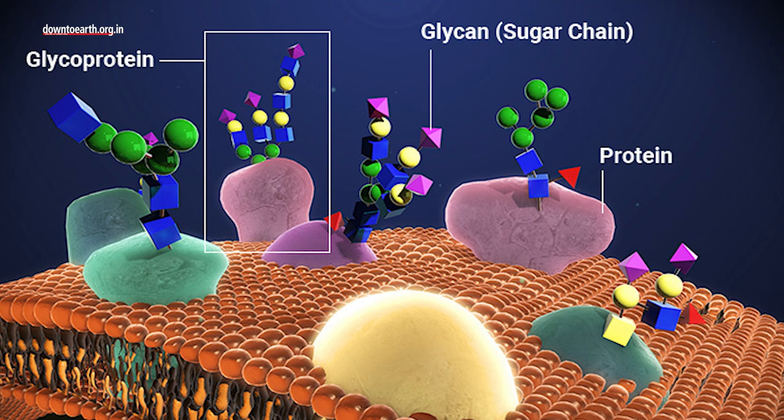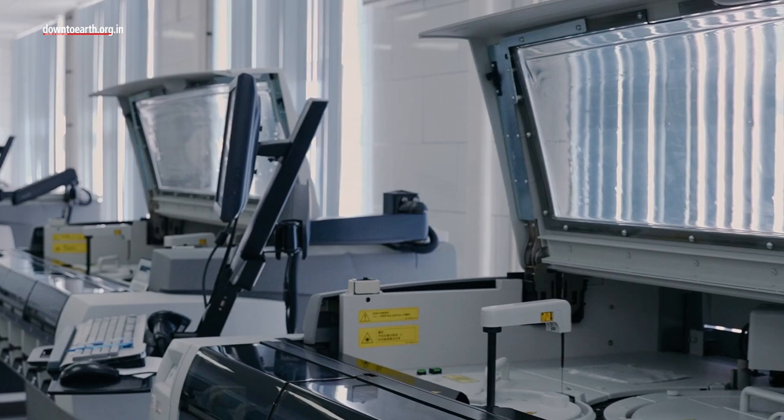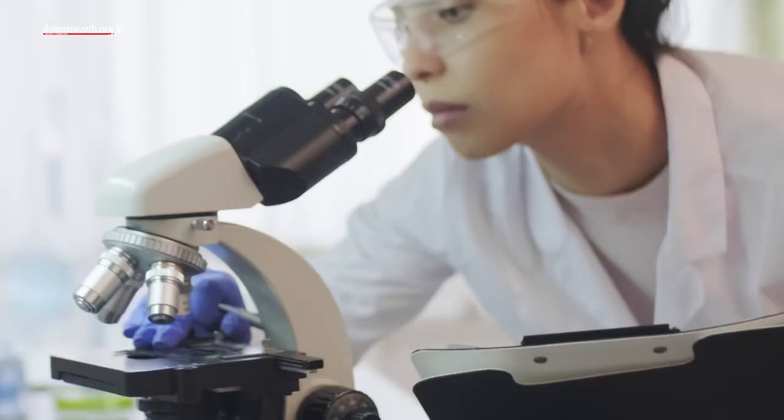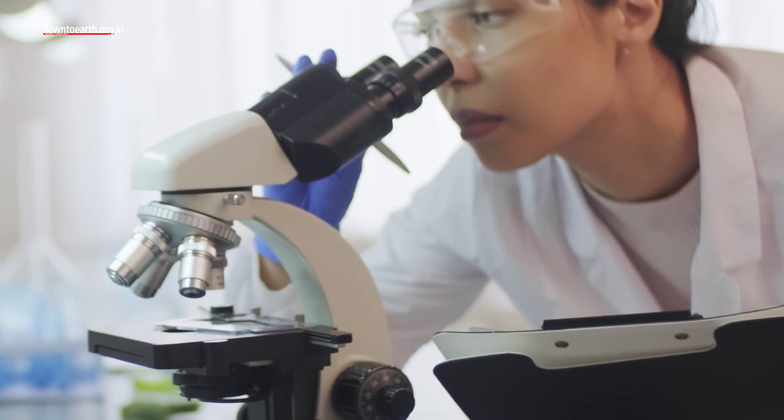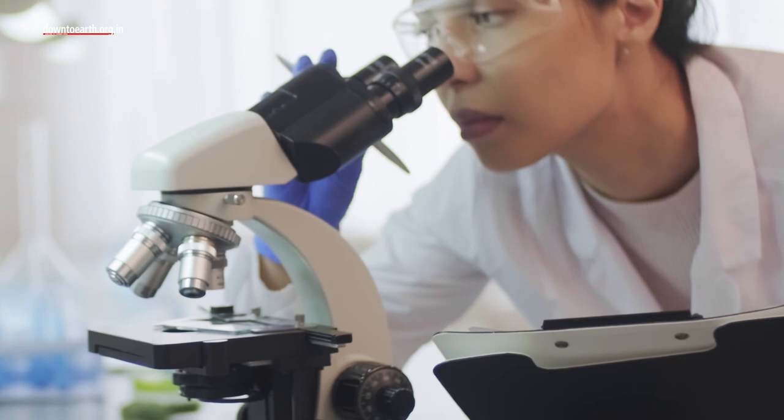The bio-orthogonal reactions helped Bertozzi map complex sugar structures lining cells called glycans. Glycans protect tumors from the body's immune system, and Bertozzi developed a type of biological pharmaceutical to block glycans' protective function. This potential anti-cancer drug is now being tested in clinical trials on people with advanced cancer.